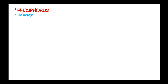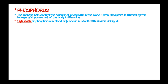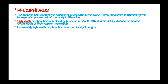The kidneys help control the amount of phosphate in the blood. Extra phosphate is filtered by the kidneys and passes out of the body in the urine. High levels of phosphorous in the blood only occur in people with severe kidney disease or severe dysfunction of calcium regulation. Excessively high levels of phosphorous in the blood, although rare, can combine with calcium to form deposits in soft tissues such as muscle.